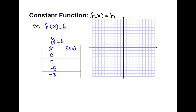If you have a function notation equal to a constant number, that's considered to be a horizontal line function. Whatever value you pick for the input x, the y value will be the same — in this example, y is equal to 6. We're going to plot these points on the rectangular coordinate system, and once we connect them, we will get a horizontal line.